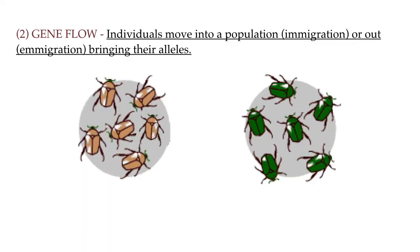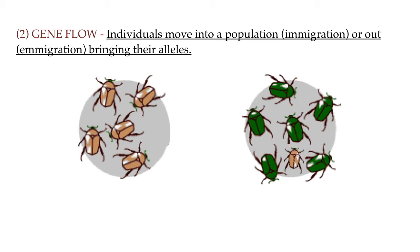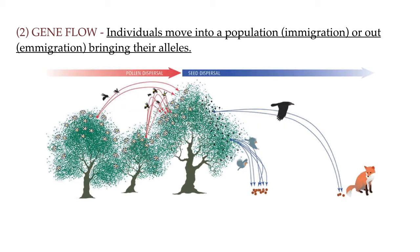Another mechanism by which allele frequencies might change in a population is migration. Some individuals from a population of, say, brown beetles might have joined a population of green beetles. That would make the genes for brown coloration more frequent in the green beetle population than they were before the brown beetles migrated into it. Any movement of individuals or the genetic material that they carry from one population to another is called gene flow. Gene flow includes lots of different kinds of events, like beetles moving from one population to another, but it can also describe the movement of gametes or embryos — for example, pollen or seeds being moved by the wind or by animals to a new destination.